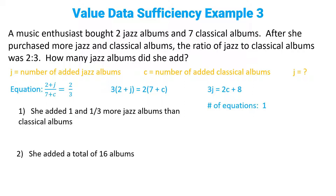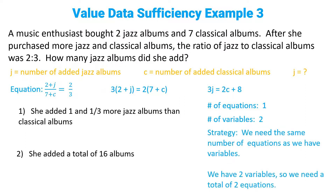That means we have been given one equation but two variables. We cannot solve for the exact value of J with only one equation and two variables. The strategy is: we need the same number of equations as we have variables in order to solve for J. We have two variables, so we need a total of two equations. They've already given us one equation in the question, so we just need one more equation and we can solve for J. Let's look at each statement and see if we get another equation.